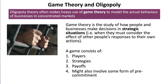A game consists of the following four things: firstly, players; secondly, strategies; thirdly, payoffs — in other words, what does each player gain as a result of the strategy that they undertake? And finally, it might also involve some form of pre-commitment.